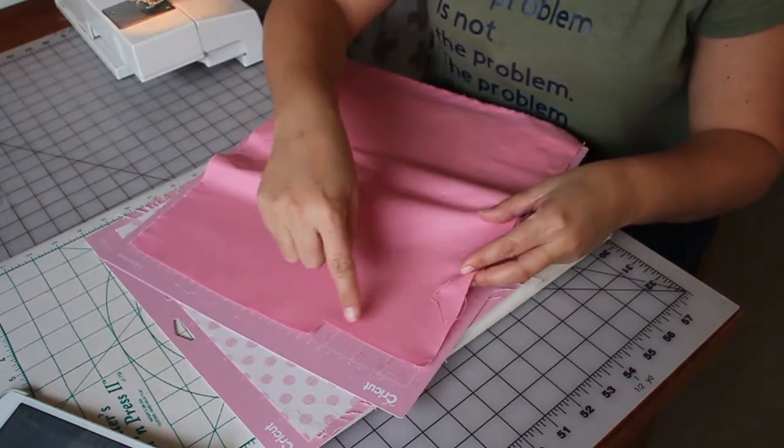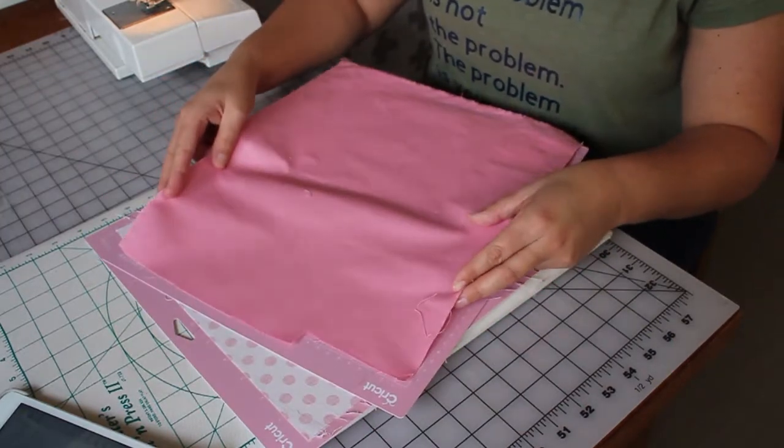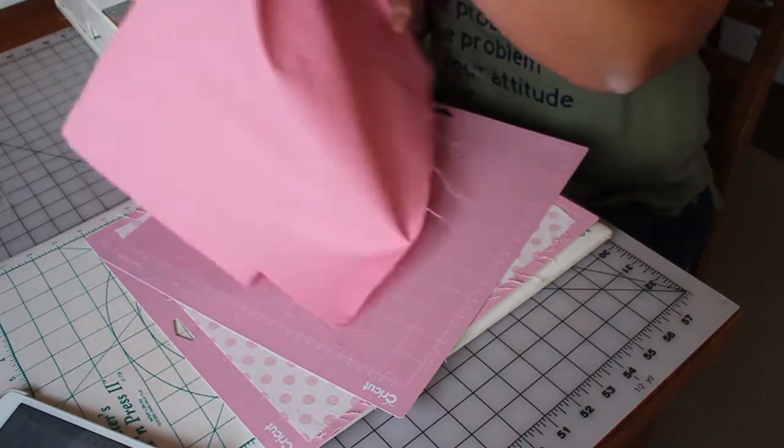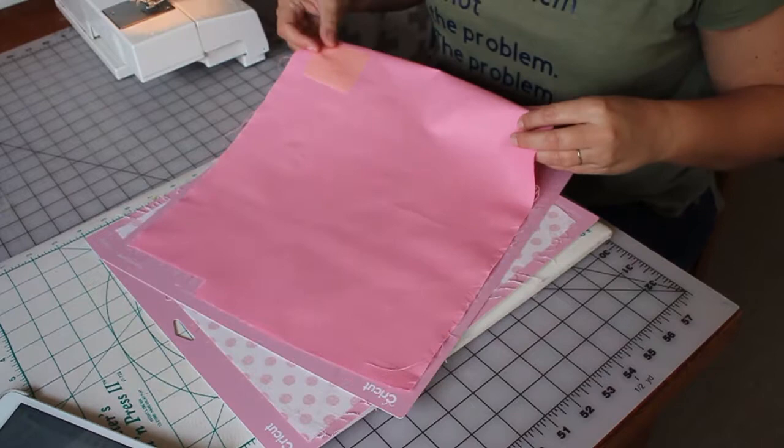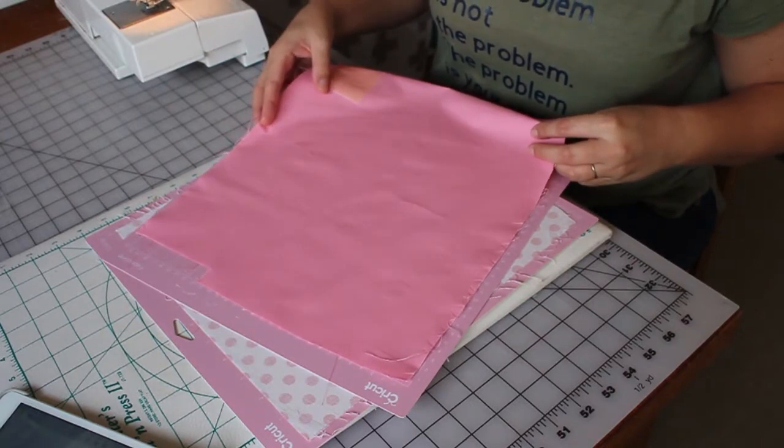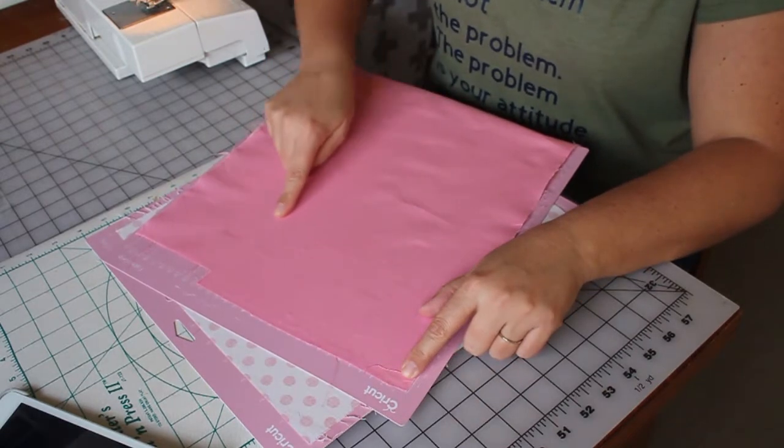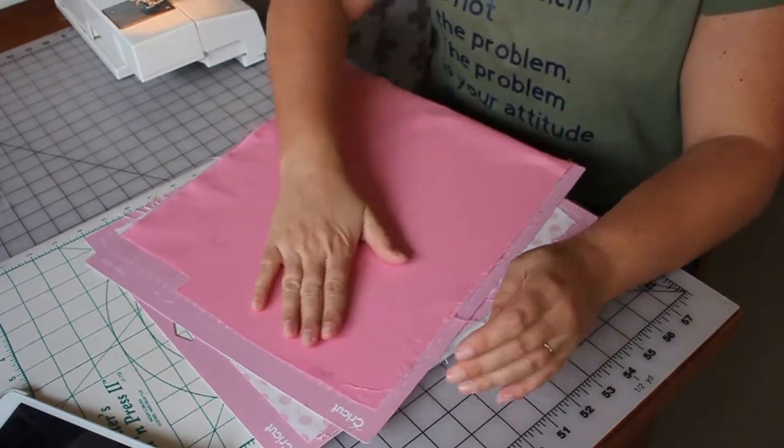I have this little notch cut out here so my options are to either move this up like this or because this is my pink fabric and it's the same on both sides I can flip it over and put it in place and then I just need to make sure that my piece is going to fit inside here which I know that it will.